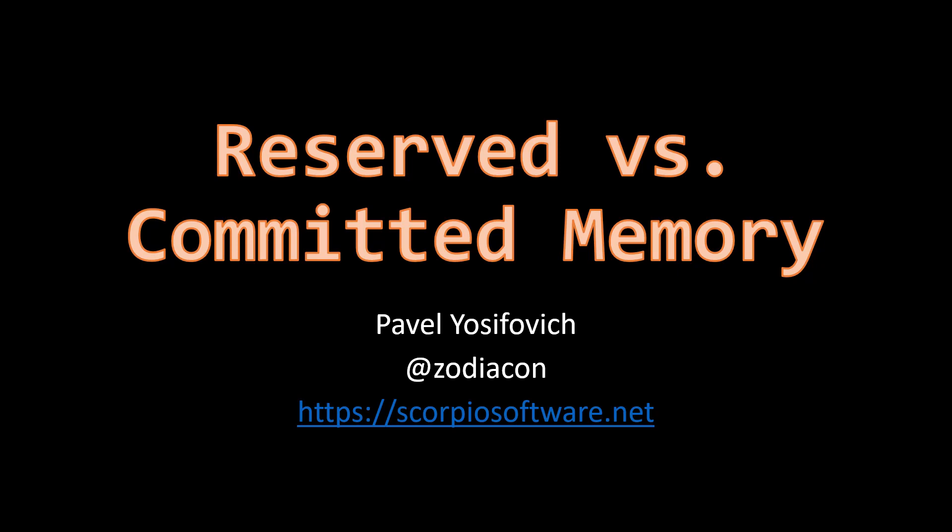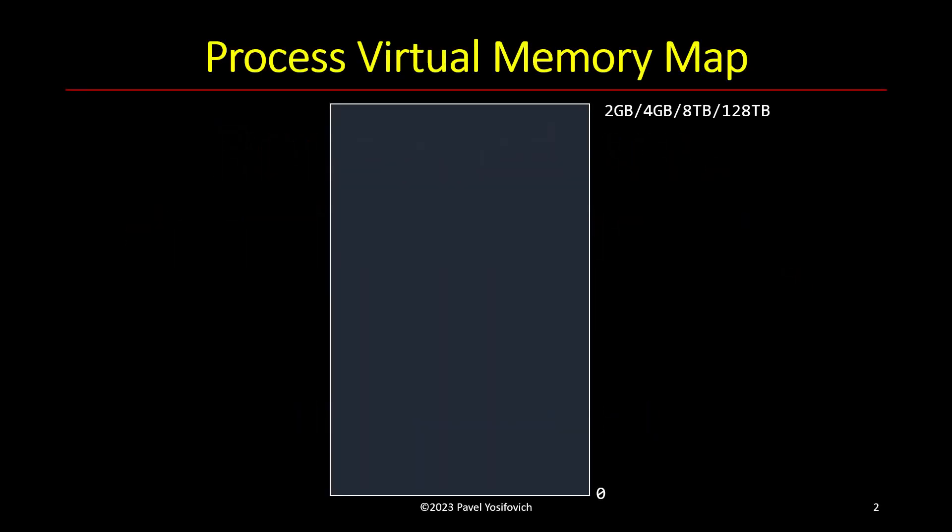Welcome to this video about the difference between reserved and committed memory. When we look at a process address space — whose size depends on whether the process is 32-bit or 64-bit and which operating system it's running on — what does that address space actually contain?